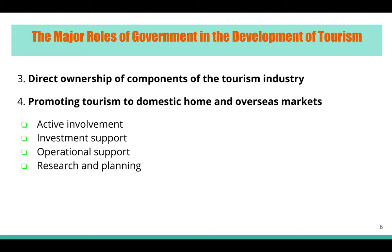The third major role is direct ownership of components of the tourism industry. For example, transportation in Korea — such as buses and the railway system — is owned by the government. Most public attractions, such as museums and parks, are also directly owned by the government. Since they own these assets, they must supervise, manage, and plan for the sustainability of those destinations.